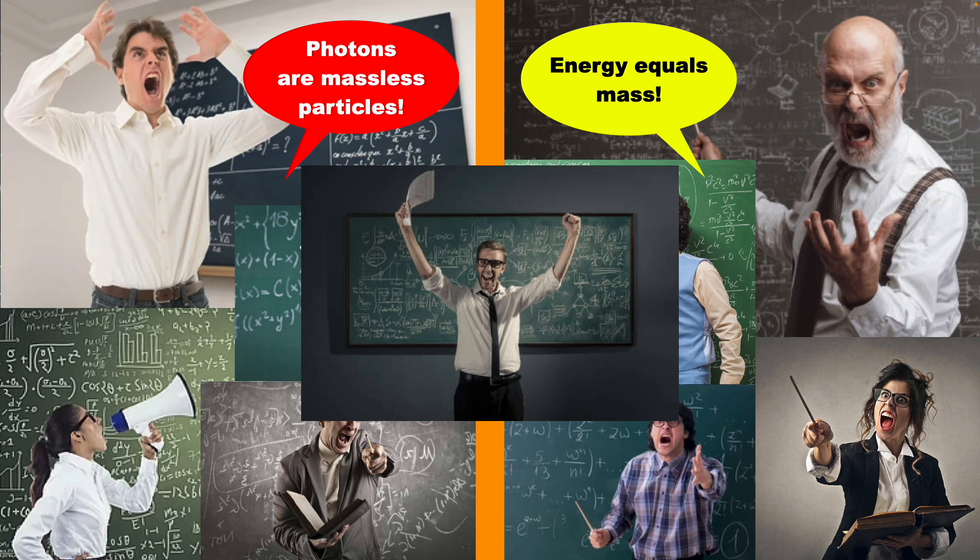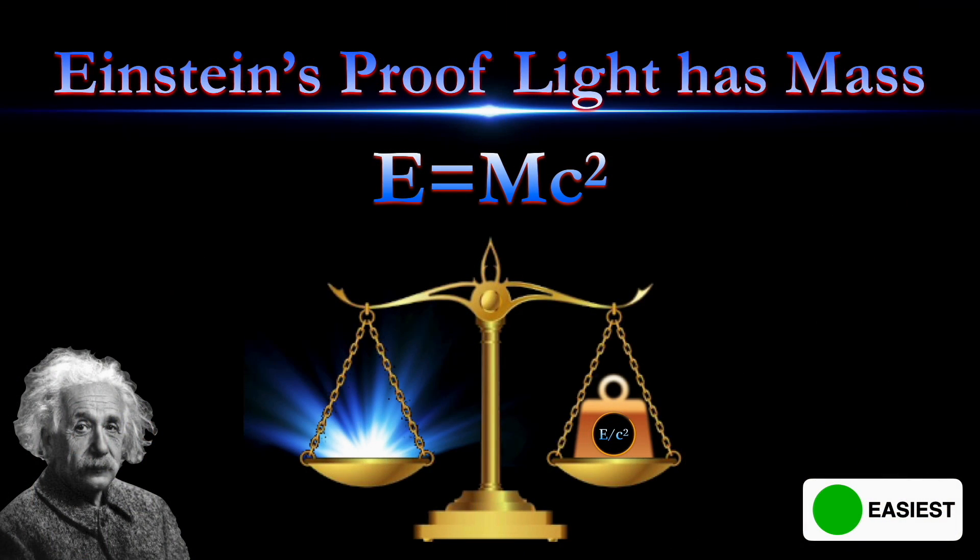If you're still not convinced that light has inertial mass, despite not having any rest mass, in my next video, I will go over Einstein's proof that light has inertial mass, which is also his derivation of the equation E equals mc squared, or as he derived it originally, m equals E over c squared,